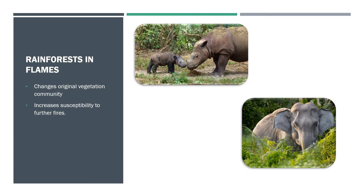This makes them especially vulnerable to local extinction from fire. Historically, tropical rainforests have not been heavily affected by wildfires — they receive heavy amounts of precipitation, which means there is little dry fuel for a fire to burn on. However, there has been a spike in wildfires in tropical regions over the last few decades.